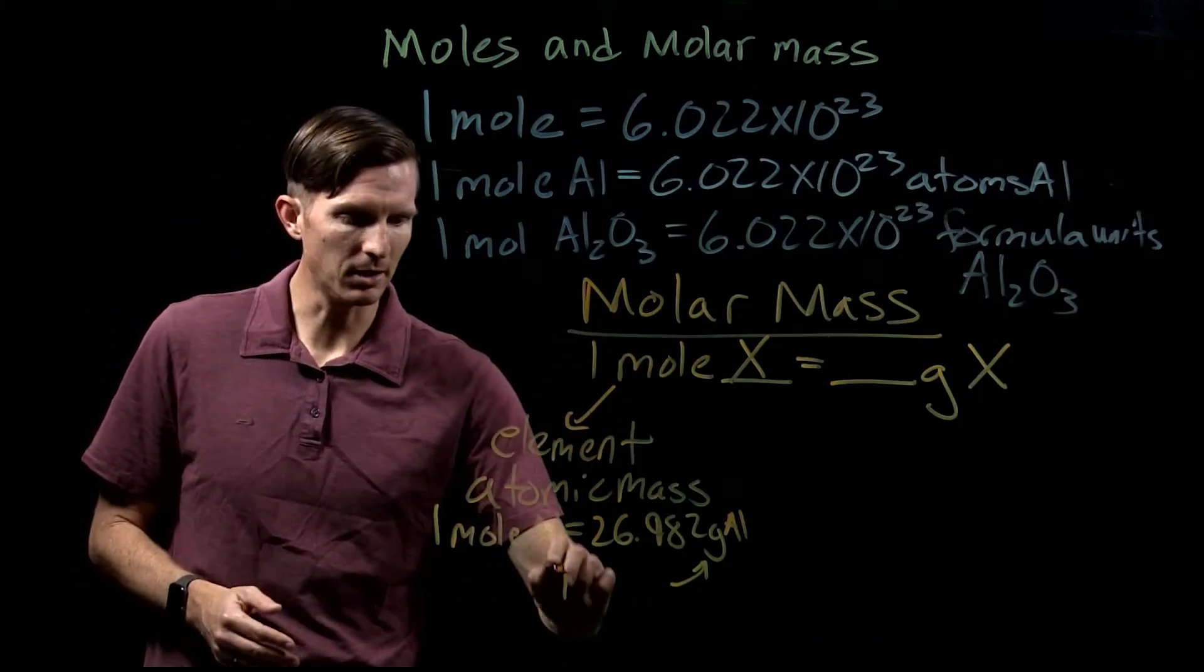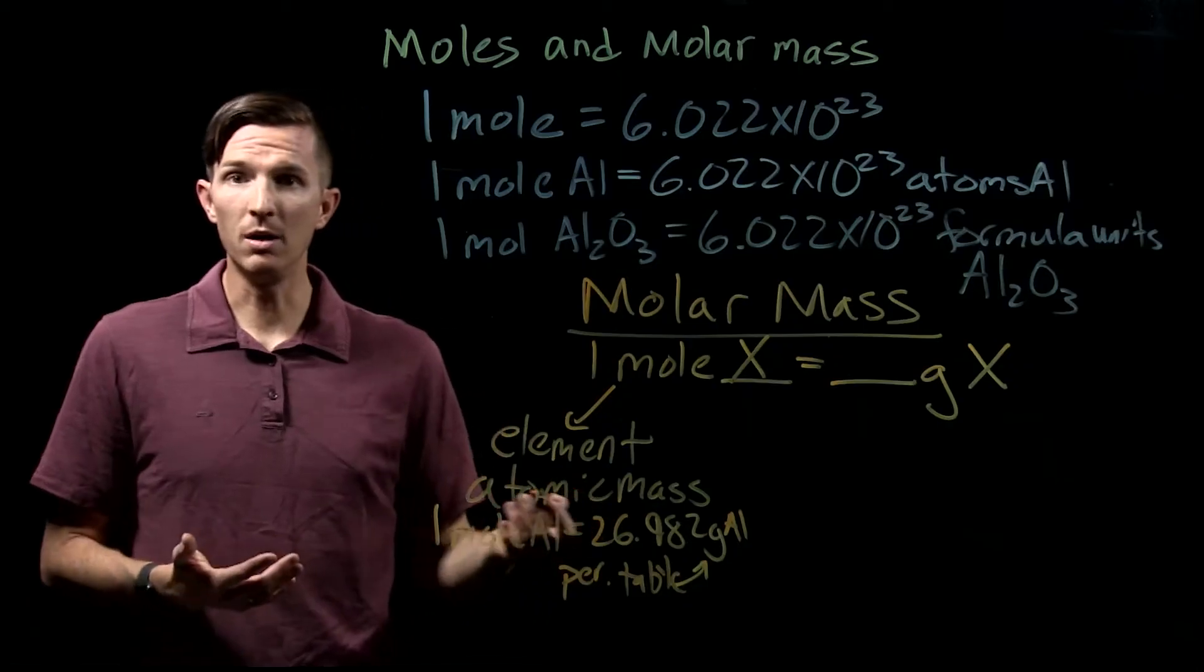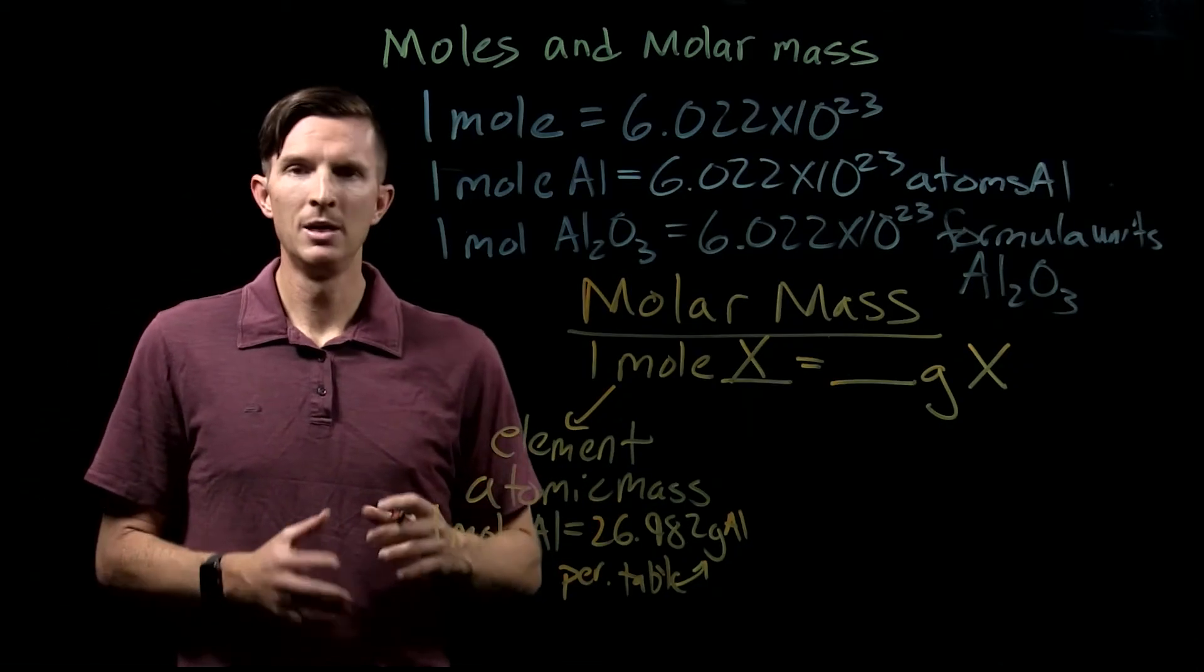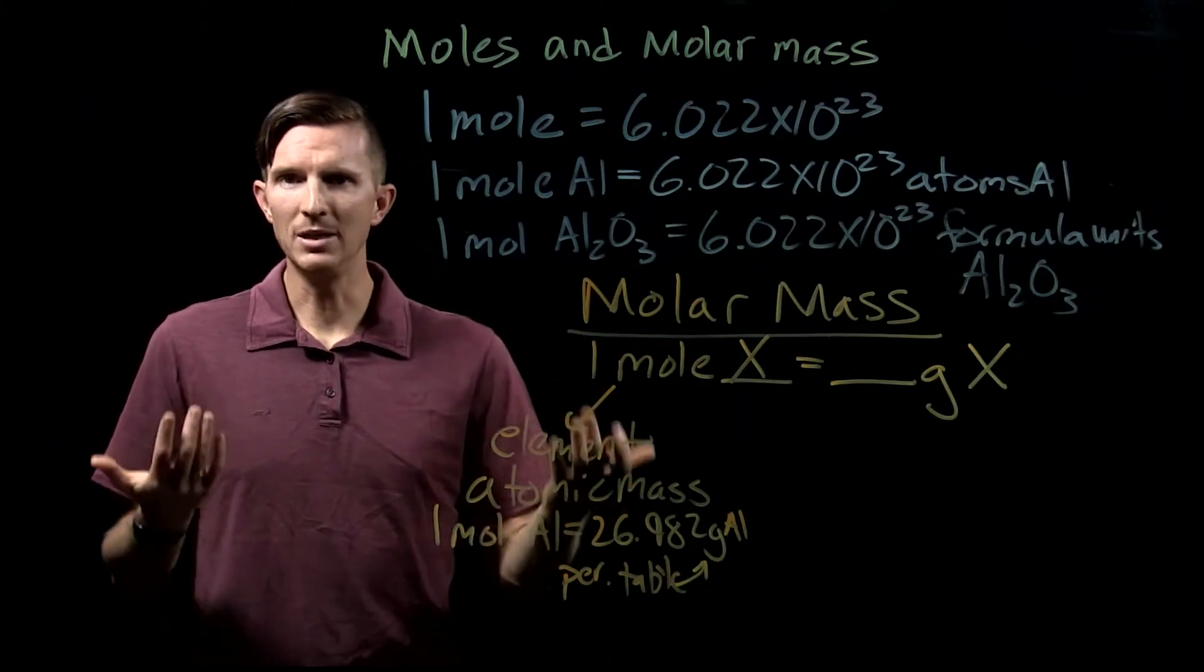It's basically a one-to-one relationship in just talking about atoms to AMU versus moles to grams. I got this from the periodic table, the value of aluminum on the periodic table. This is just an element by itself, like copper, aluminum, iron, or magnesium.